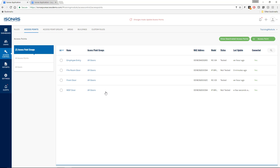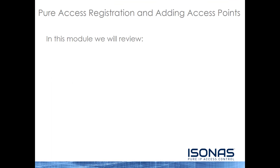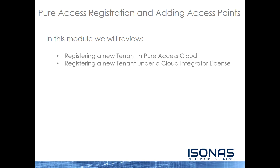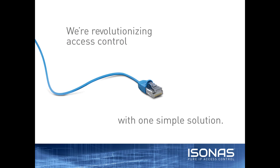This is basically the first step in getting our Peer Access tenant configured — we registered the tenant and added access points into it. In the next course, we'll get into adding users, creating rules, and getting people through the doors. In this module, we reviewed registering a new tenant in Peer Access Cloud, registering a new tenant under a cloud integrator license, and adding access points using the access point wizard — covering the RCO4, the RCO3, and the IP bridge which represents multiple access points. Thank you for watching this training video and have a fantastic day.